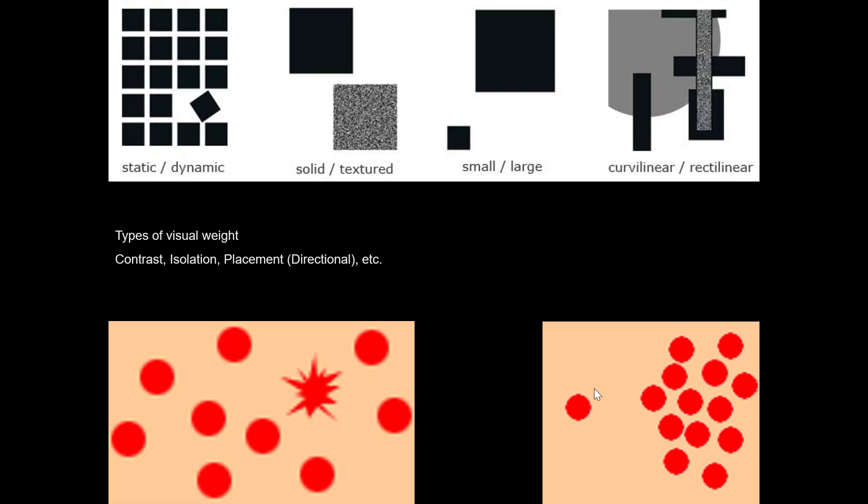So things that you notice because they have some sort of contrast, that contrast could be as simple as the shape. Although here, they're cheating a little bit too, because when they are letting this one take up this much space, that square actually has more value contrast as well because it's surrounded by a larger area of white.